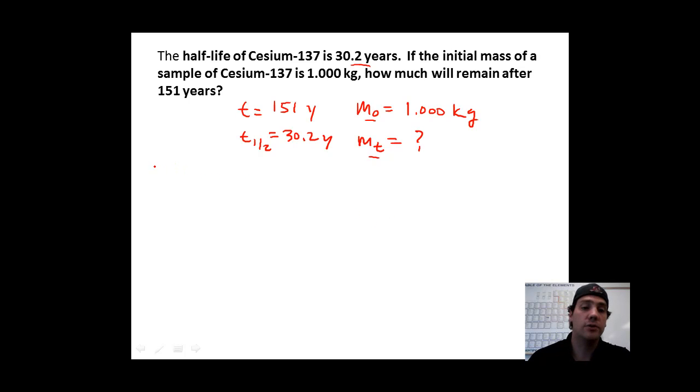The second step is to find the number of half-lives. The way we do that is by looking at the variable that we have two values for. In this case, it's going to be our time variables. To find the number of half-lives, simply take the total time and divide by the length of a half-life. So 151 years divided by 30.2 years equals five half-lives.